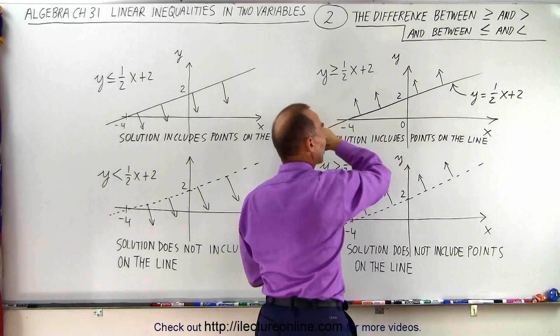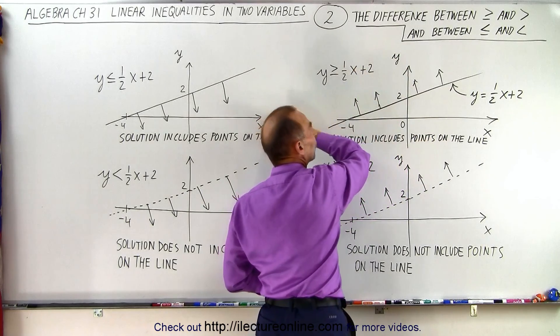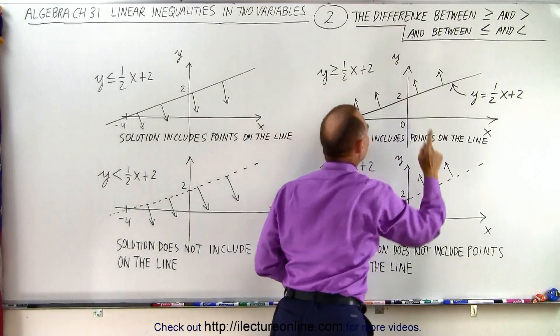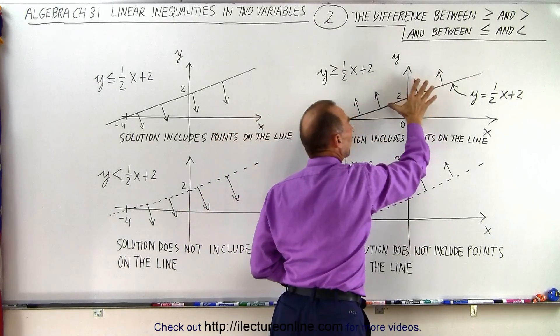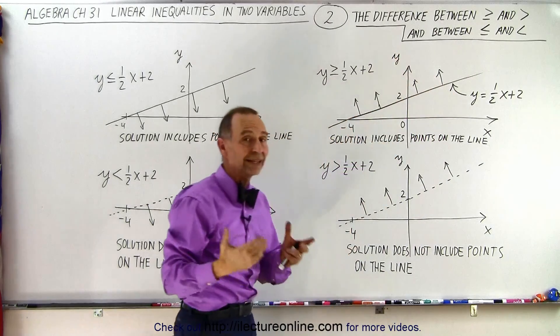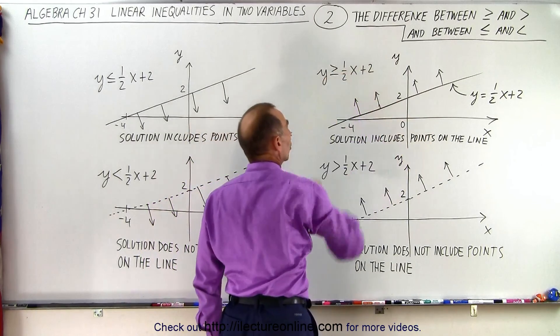This is the boundary of two regions, the region above and the region below. In this case, all the points above the line, including all the points on the line, are part of the solution that satisfy the inequality. All the points below the line do not satisfy the inequality.